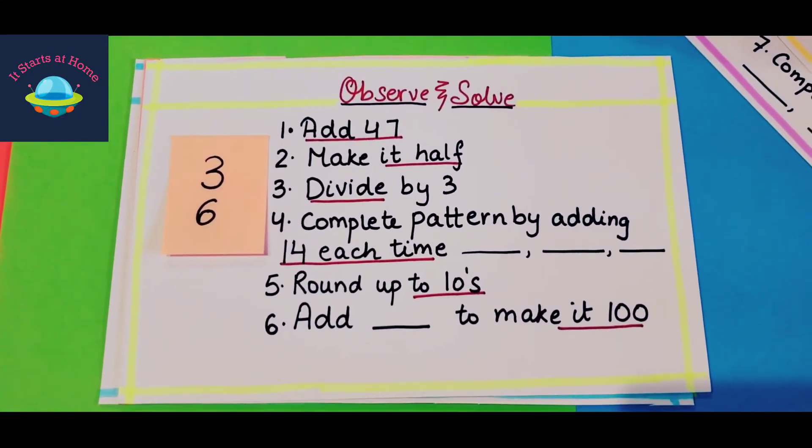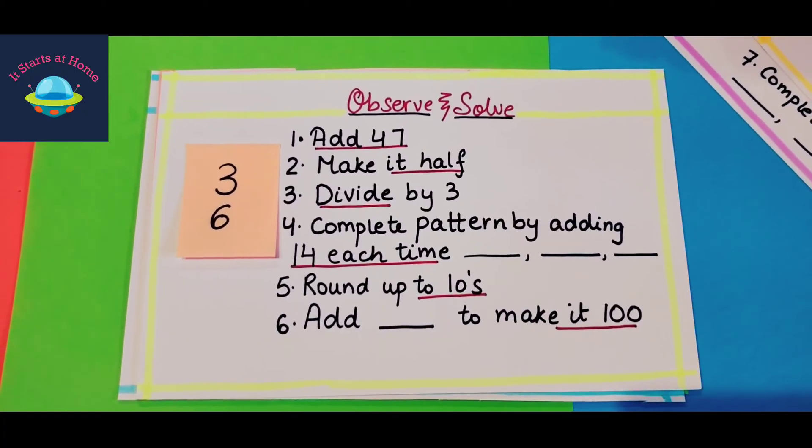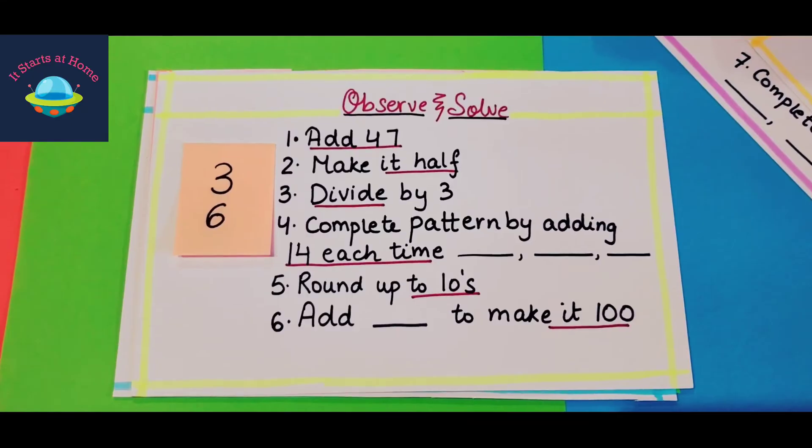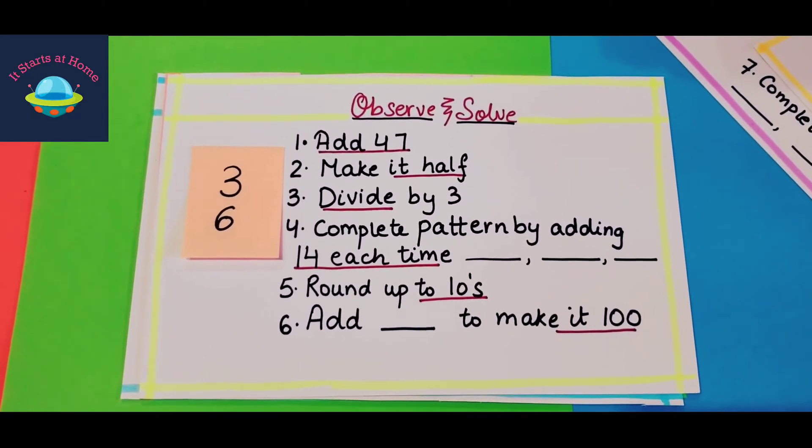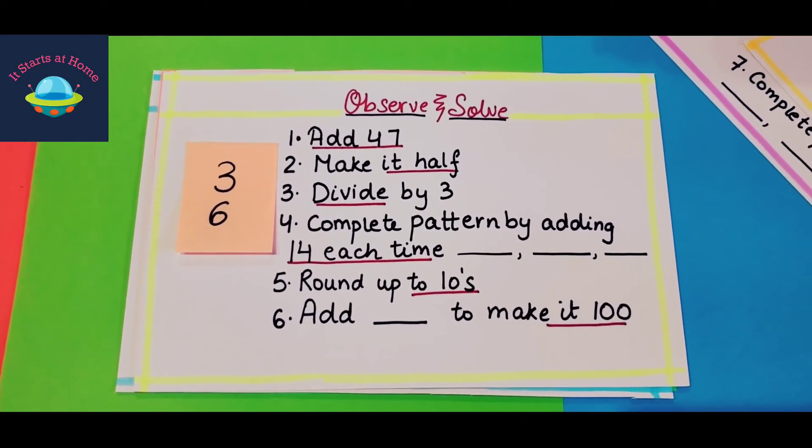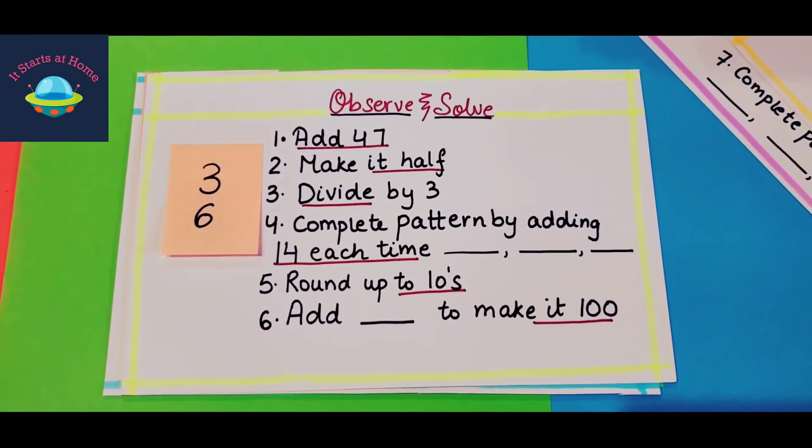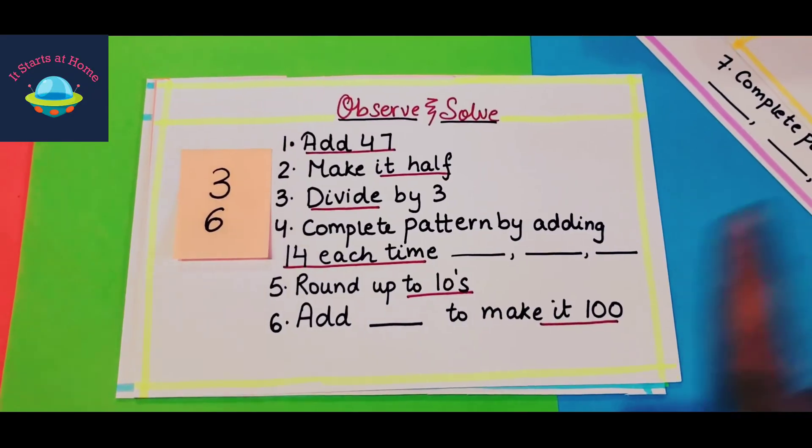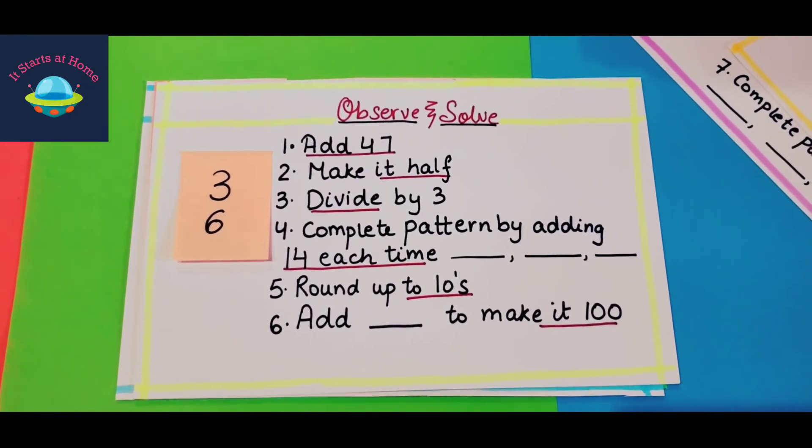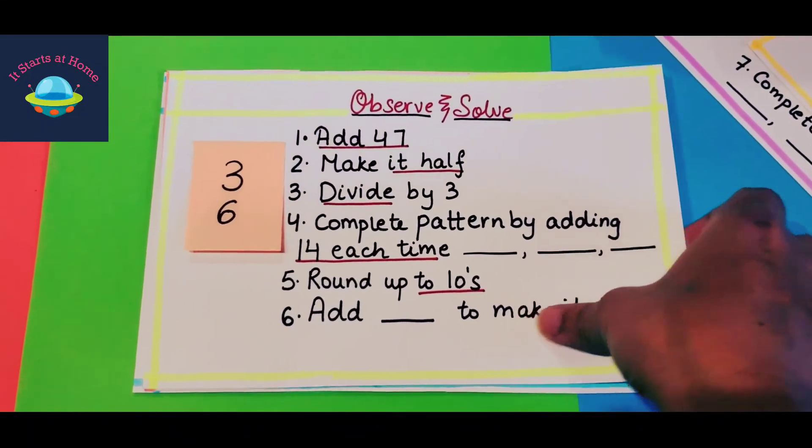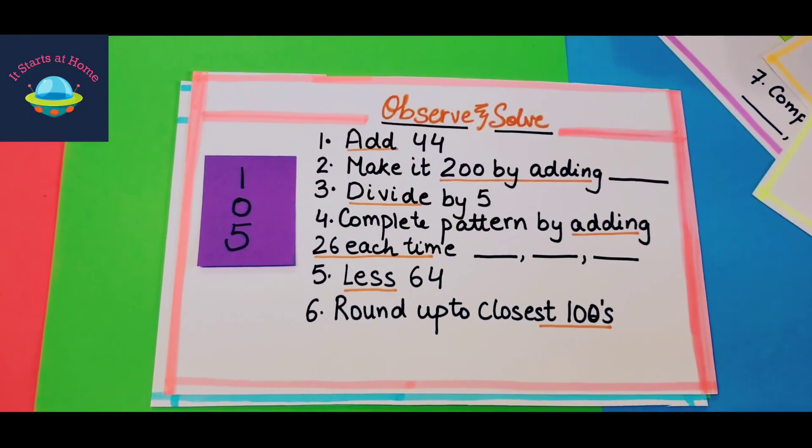Now card number 3, where I've only used 36, and this is not a three-digit number. Here I've written add 47, make it half, divide by 3, complete each pattern by adding 14 each time, round up to tens, add dash to make it 100. So he needs to have these six points figured out for this one.